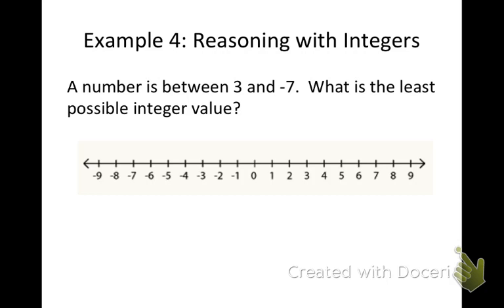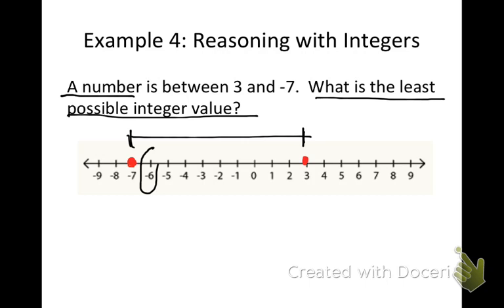Now we're going to apply what we know. Example 4: reasoning with integers. We want to find a number that has to be between three and negative seven. First on our number line, we should mark out positive three and negative seven. Then it asks: what is the least possible integer value that will be between these two numbers? I want the smallest number, so I'm going to think that's negative six. I need a whole number, so the least possible integer between those two is negative six.